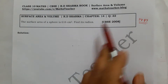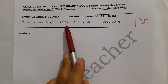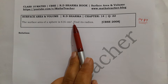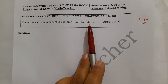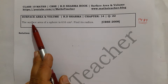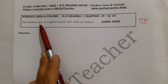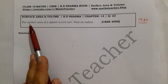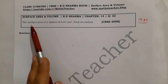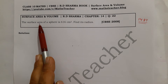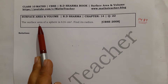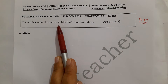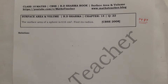This is Question number 22, page 14.87. The surface area of a sphere is 616 cm². Find its radius. Here we have just written the surface area — don't be confused. If there is a curved surface area, it will be mentioned in the question. But if it says only surface area, it means total surface area. So we have the total surface area of the sphere and we have to find the radius.